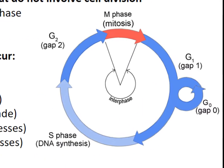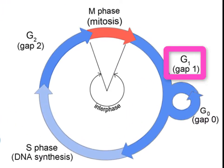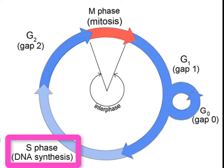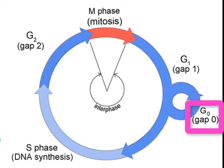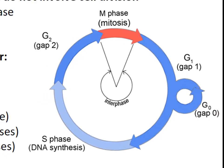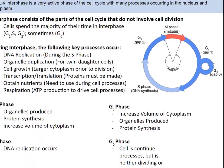The phases of interphase: first, we have the G1 phase. Here, organelles get produced, proteins get synthesized, and the overall size of the cell is increasing, including the cytoplasm. When the S phase rolls around, the DNA gets replicated — the cell needs to make an identical copy. In the G2 phase, the cell is still growing, organelles are being produced, and proteins continue getting synthesized. The G0 phase does not mean nothing is happening — the cell is going about its business and processes continue, but no processes related to dividing or preparing to divide.